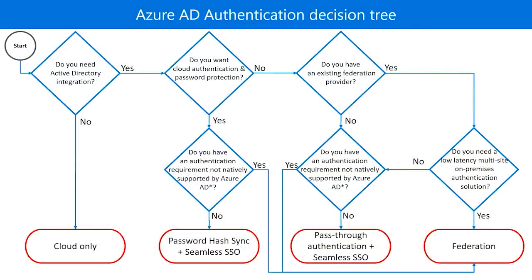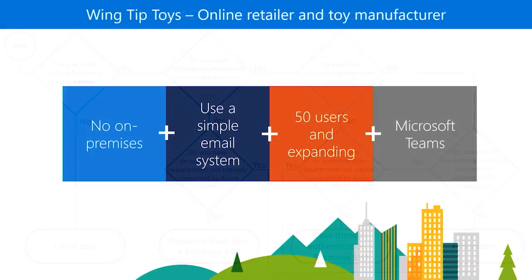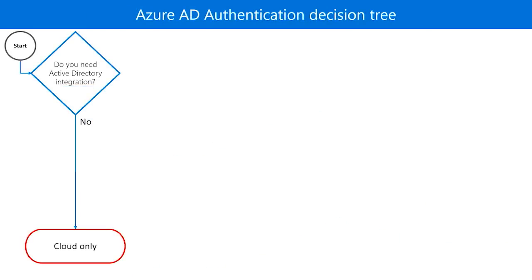This decision tree will make it easier for you to choose the right authentication method for your organization. You can use it to determine what is the best method by answering a few simple questions. Let's explore a few examples. Wingtip Toys is an online retailer for toys they manufacture. Today, they use a simple email system from their internet provider, and they want to use Microsoft Teams to collaborate around new projects. Since they don't have an on-premises footprint, cloud-only is the right option for them.